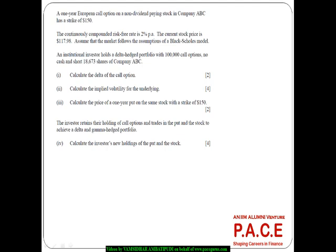Let's look at a practice question with respect to the Black-Scholes formula. We have a one-year European call option on a non-dividend paying stock, so Q is 0. The time to maturity is one year, and the strike price of the option is 150. The continuously compounded risk-free rate is 2% per annum and the current stock price is 117.98. We assume the market follows the assumptions of a Black-Scholes model, so we can take these numbers into the Black-Scholes option pricing formula.